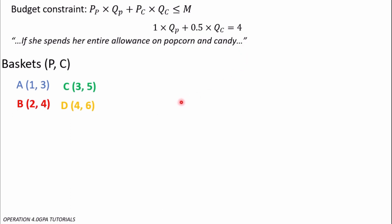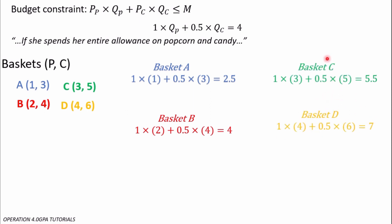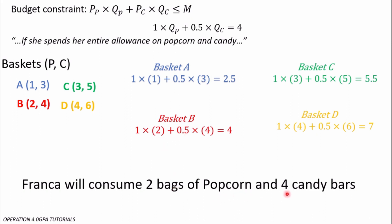We fix in the baskets to see which one equals 4. For Basket A: 1×1 + 0.5×3 = 2.5, so she can buy it but it doesn't use her entire allowance. For Basket B: 1×2 + 0.5×4 = 4 — this equals her income exactly. Baskets C and D cost more than her income, so she cannot afford them. We can conclude that Franca will consume two bags of popcorn and four candy bars.